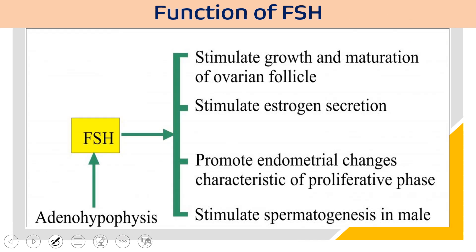The main function of FSH is to stimulate the growth and maturation of ovarian follicles — from the germinal epithelium through primordial, primary, secondary, and finally Graafian follicles. FSH also stimulates estrogen secretion from the ovary, promotes endometrial changes characteristic of the proliferative phase, and stimulates spermatogenesis in males.